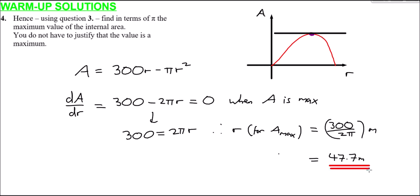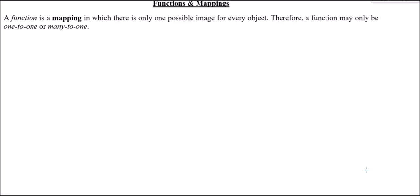So we're suitably warmed up, let's have a look at the main body of today's lesson: functions and mappings. A function is defined as a mapping in which there is only one possible image for every object. Therefore, a function can only be one-to-one or many-to-one. A one-to-one function maps each element from the domain to a unique element in the range. A many-to-one function, like y = x², maps many x-values to the same y-value — for example, both 6 and −6 map to 36.